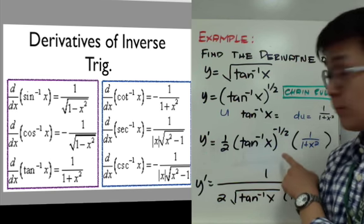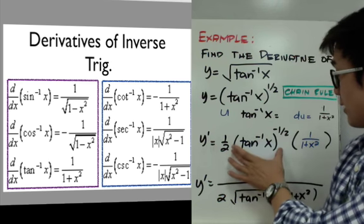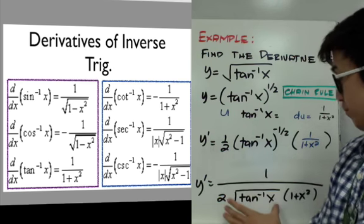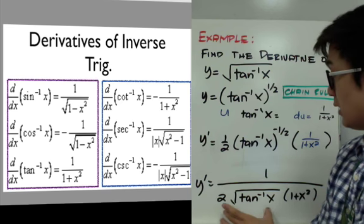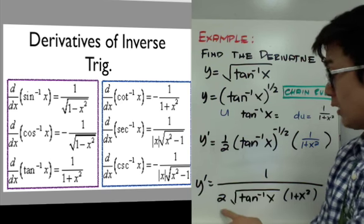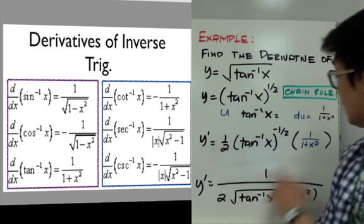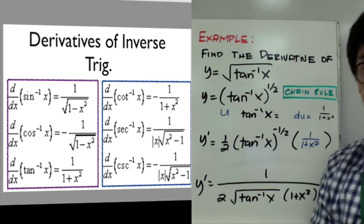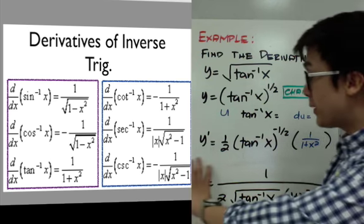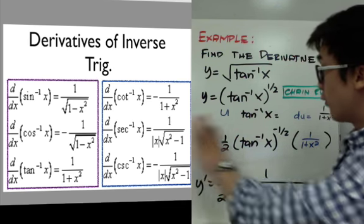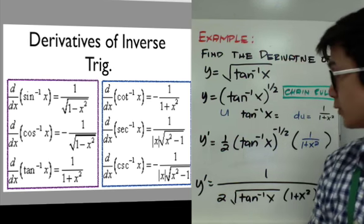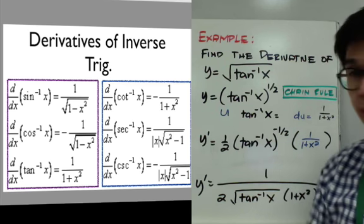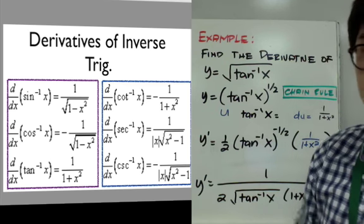However, if you still want to further simplify it — since this is a negative exponent, we'll move it to the denominator. Since one half is in the numerator, 2 goes to the denominator, and 1 plus x squared also goes to the denominator. This will be the simplest form of the derivative of the function.